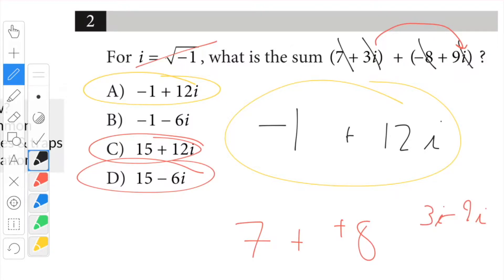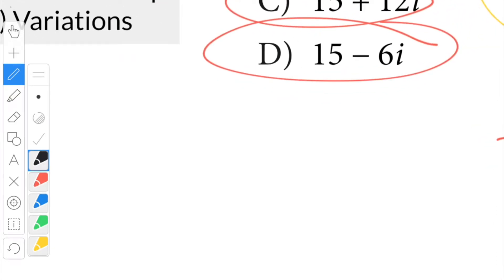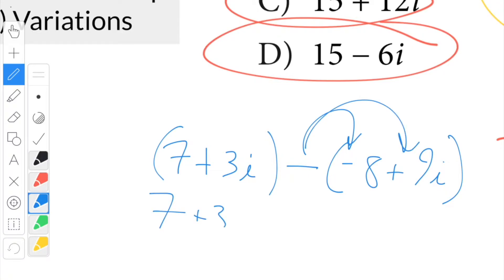Some variations you have to worry about. If they had written, say for example, 7 plus 3i minus negative 8 plus 9i, you have to remember to distribute the subtraction first, and it's always worth it to write it out. Plus 8 minus 9i, and then combine like terms.